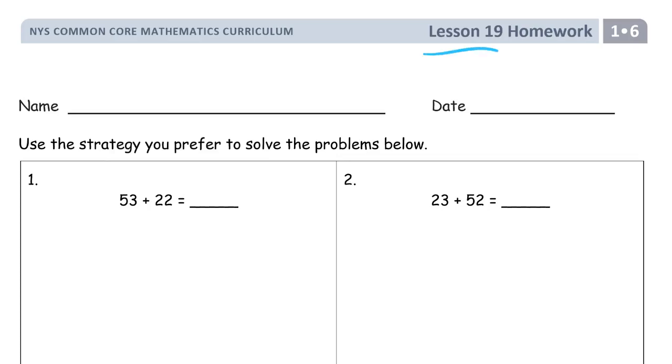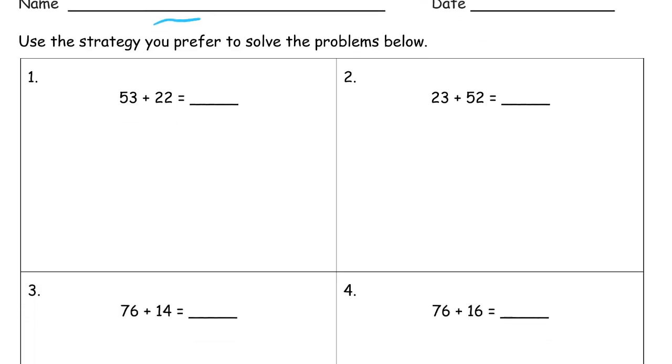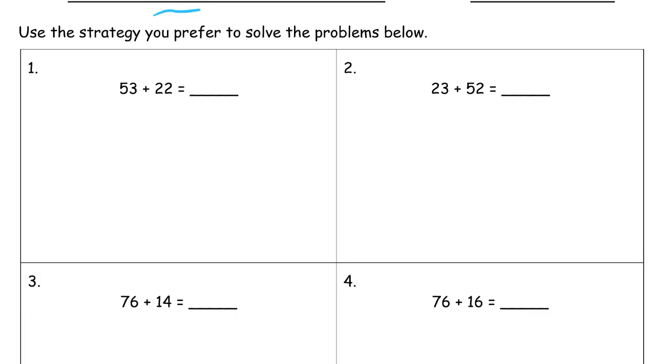This is the homework for lesson 19. It's module 6 of first grade. Write your name here first. We're using whatever strategy we want to solve the problems. Now if you have a favorite strategy that you just like to use, just stick with it. It's your go-to strategy. That's okay.